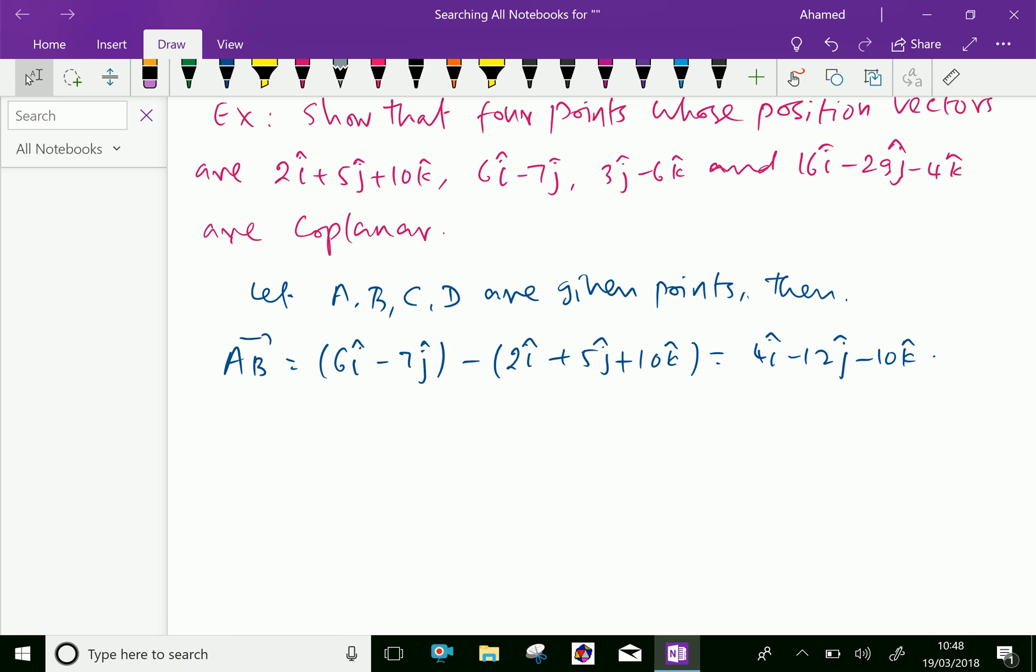Next, AC equals C minus A. The third point is 3j minus 6k minus 2i plus 5j plus 10k, which equals minus 2i minus 2j minus 16k.